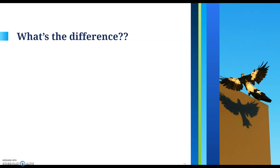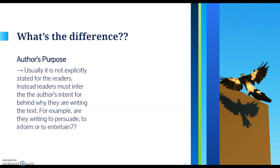They're very closely related, but there is a difference, and we're going to talk about that today. Author's purpose usually is not explicitly stated for the readers — basically it is not stated in black and white right on the page. Instead, readers must infer the author's intent behind why they're writing the text. Remember our inference skills: it's making an educated guess. A lot of you are naturally doing this, which is great, but that is more the author's purpose versus the main idea.